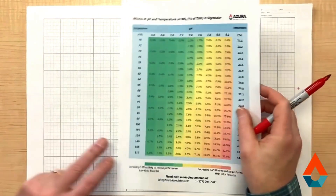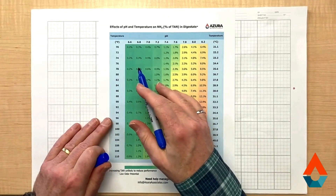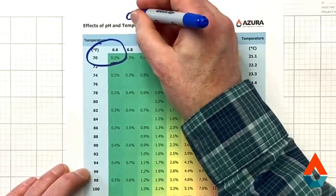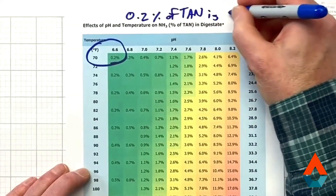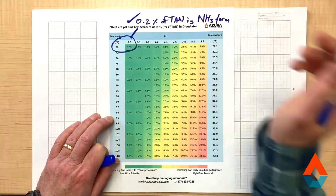We call this the ammonia rainbow chart. If you're ever talking to someone at Azura and you ask about the ammonia rainbow chart, this is what we're referring to. This chart shows what percentage of the TAN — the Total Ammonia Nitrogen — exists in the bad NH3 form. For example, at 70°F and a pH of 6.6, we have 0.2% of the TAN in the ammonia form. So 0.2% — probably pretty good, and you're probably pretty happy with that.